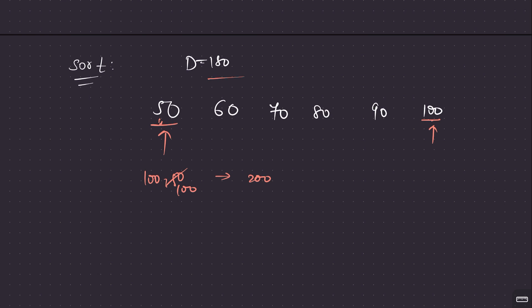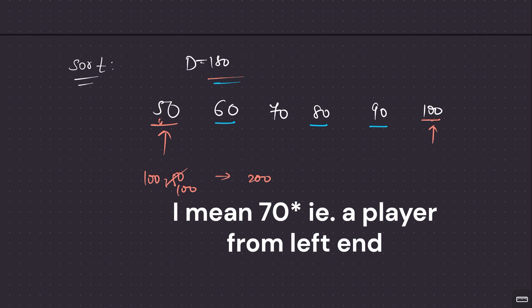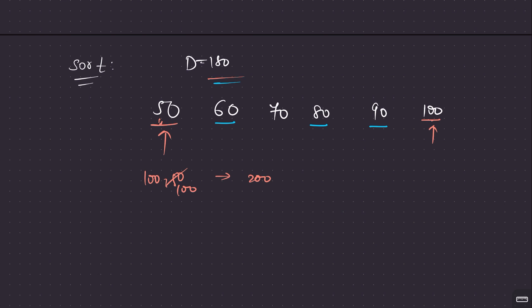Next, for the player with power 90, if we pair with 60, the team power is 90+90=180, which is not strictly greater than 180. So we also add 80, giving us three players all at power 90, totaling 270. That exceeds 180, so we get a second winning team. The remaining player (70) cannot form a winning team on its own.